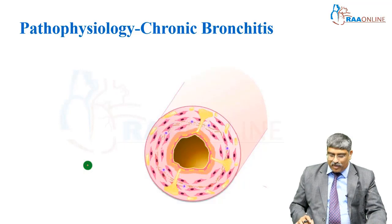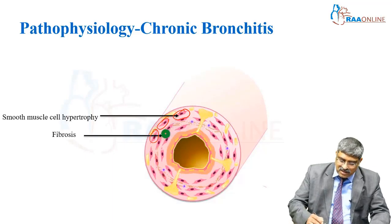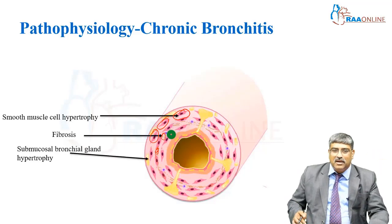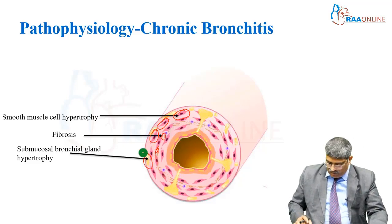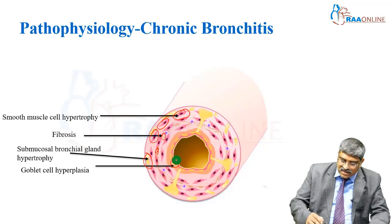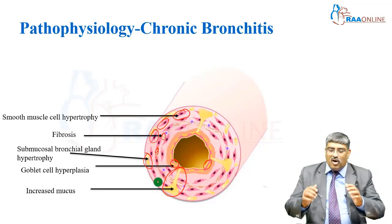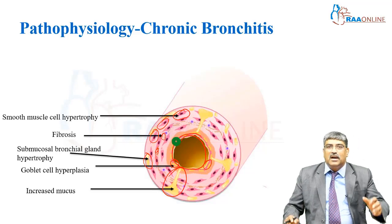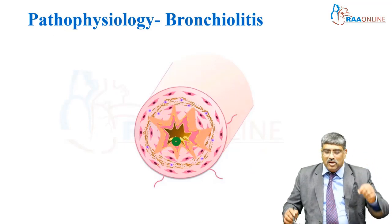Coming to the pathophysiology of chronic bronchitis, the first thing is smooth muscle hypertrophy. Then elastin fibers are destroyed, with fibroblasts coming in and fibrosis happening. There is submucosal bronchial gland hypertrophy, goblet cell hyperplasia, and increased mucus production. All of this makes the bronchus narrower and it becomes obstructive.